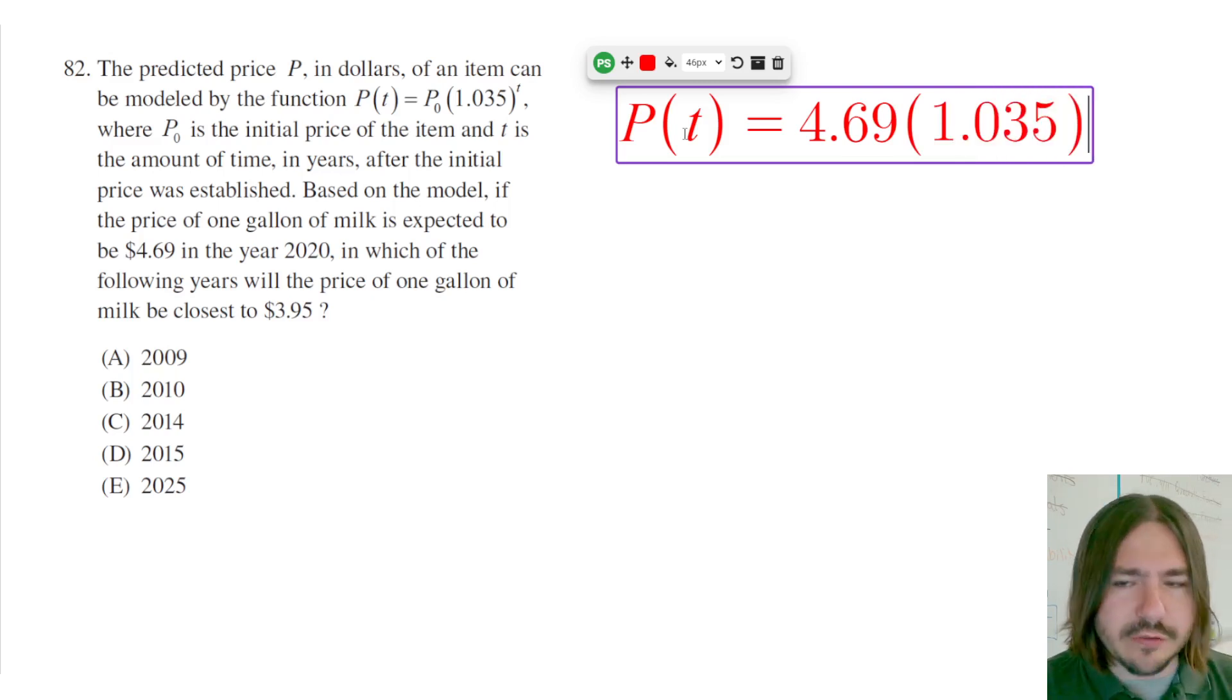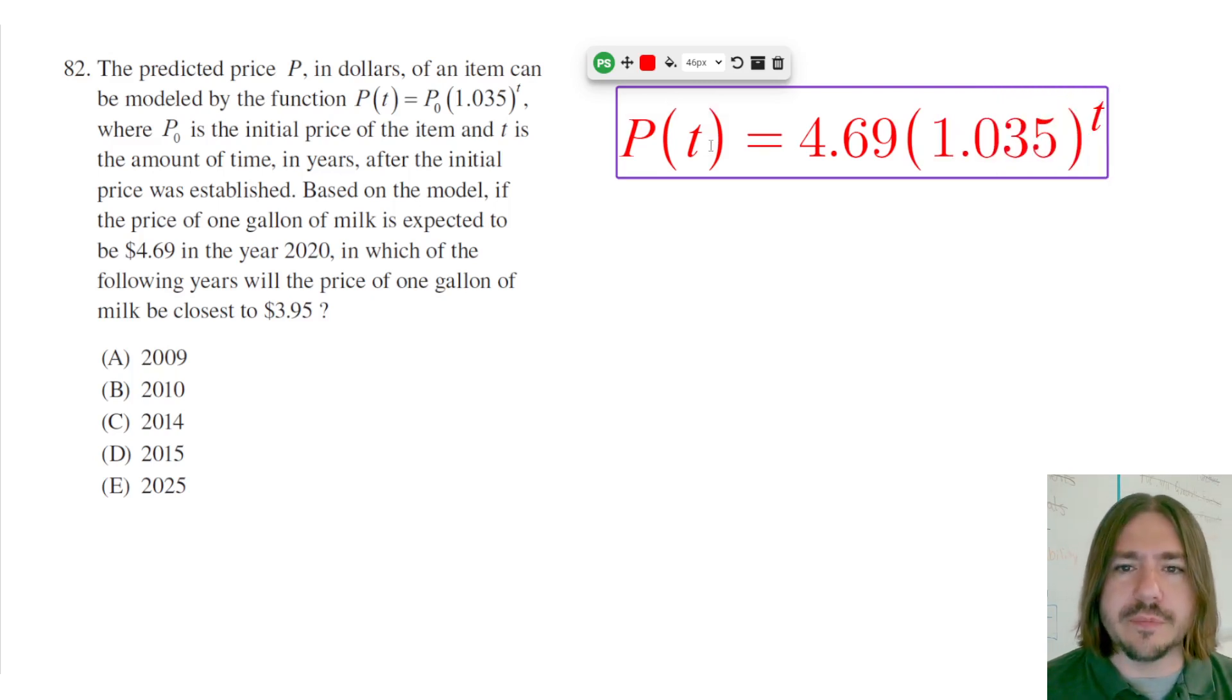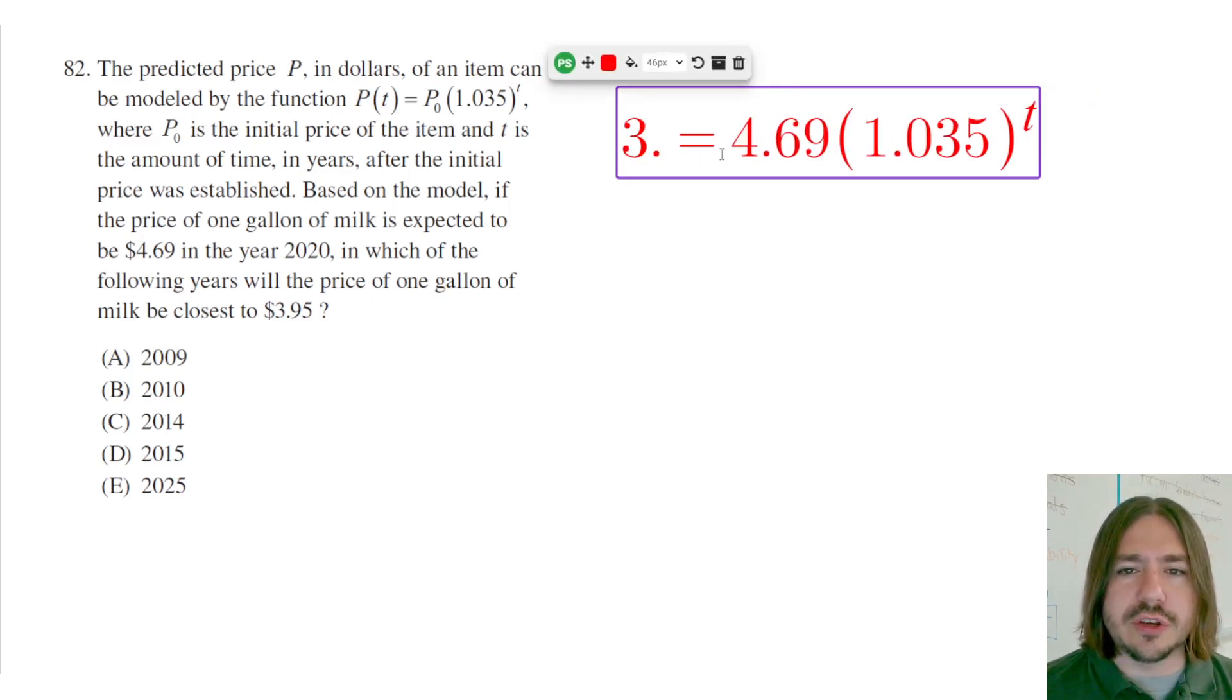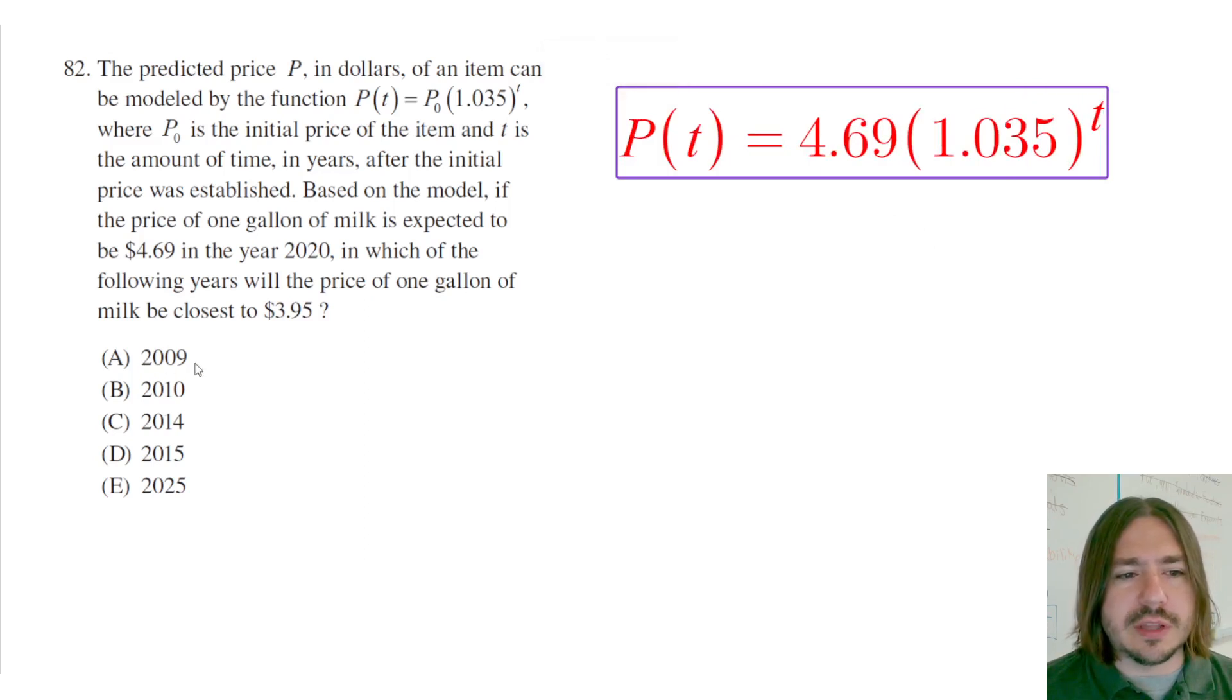So there's two ways we could go about solving this. The first way is going to be to essentially plug in $3.95 here to our price that we're interested in and then solve for t. The other way we could do it is we could just plug in the values for t into the equation and see which one's 3.95.